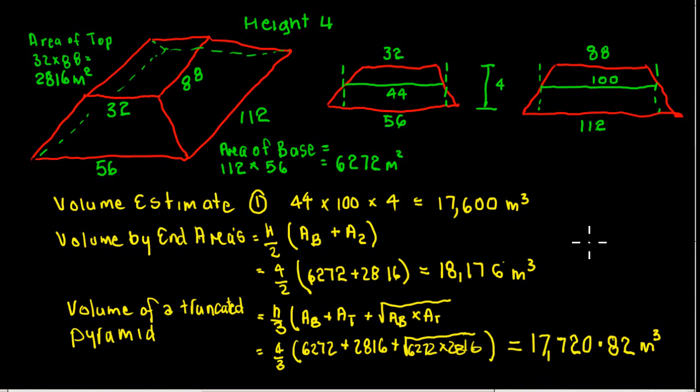The end area method is perhaps known as, in terms of similar methods of calculating volume, one of the least accurate once. And in this case here you can see that it says about 500 cubic meters more.